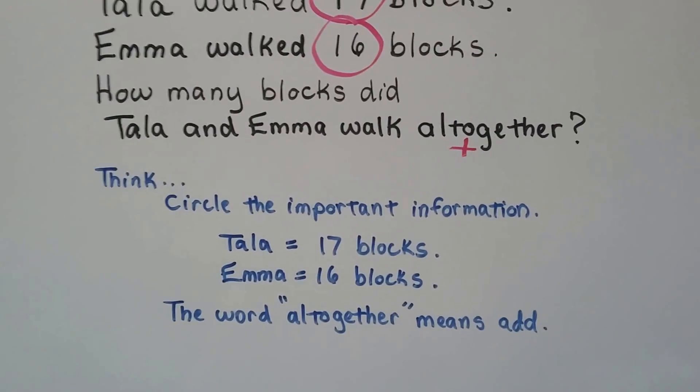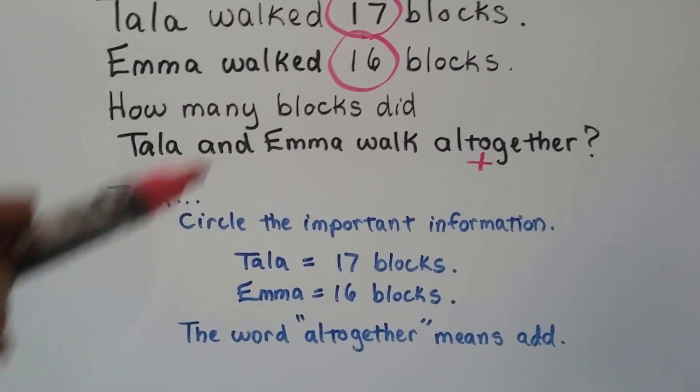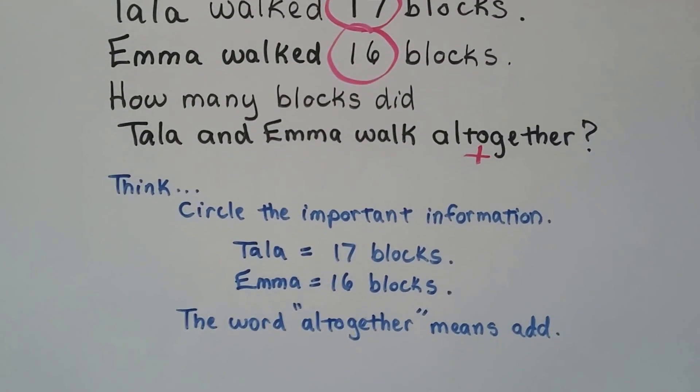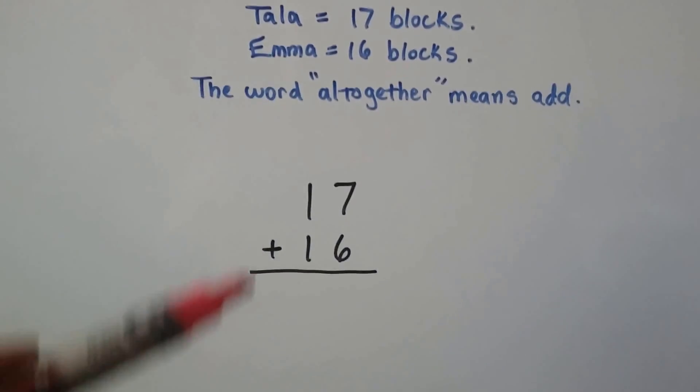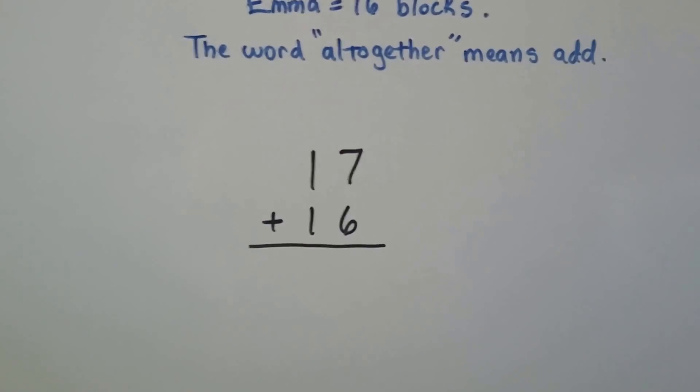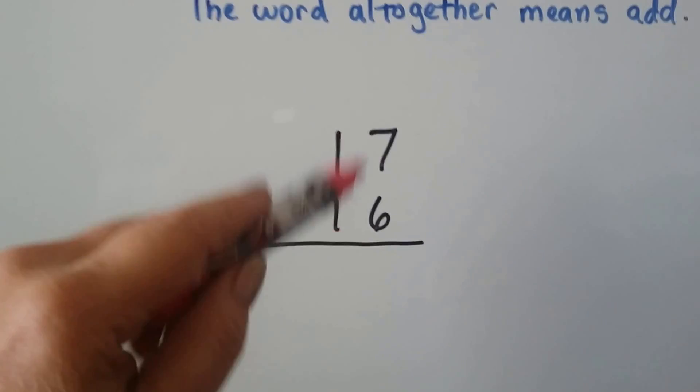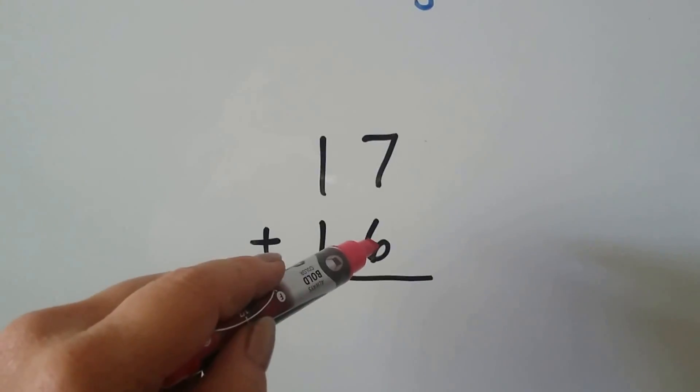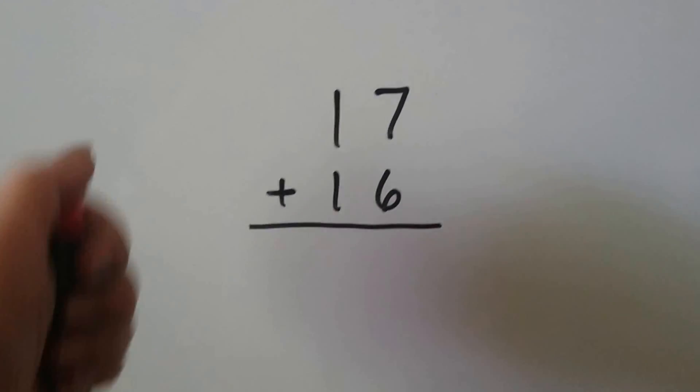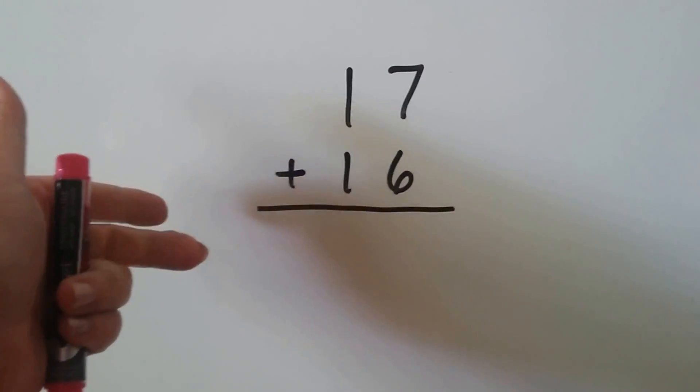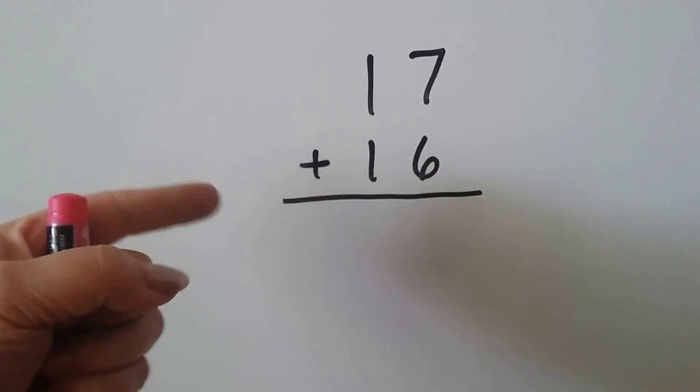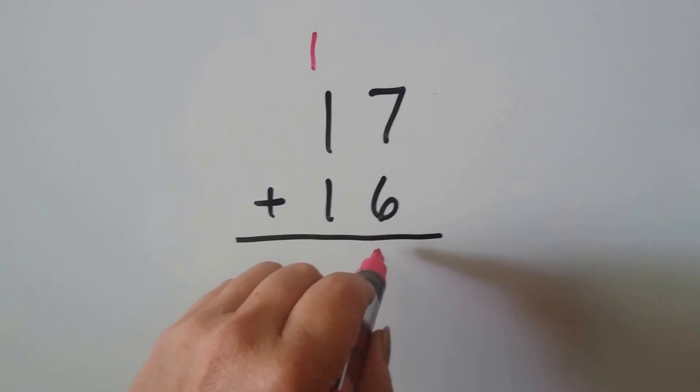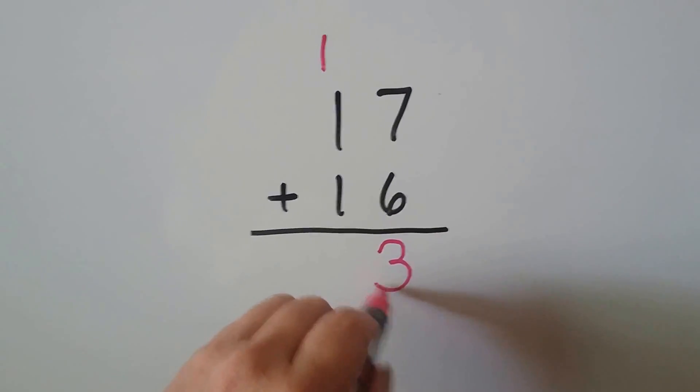And we can stack the 17 on top of the 16 and add them. We put the 17 on top of the 16 to add them. We add the ones place first. We start with the larger number 7 and count on the 6: 7, 8, 9, 10, 11, 12, 13. We regroup the 1 from the 13 to the tens place and put the 3 in the ones place.